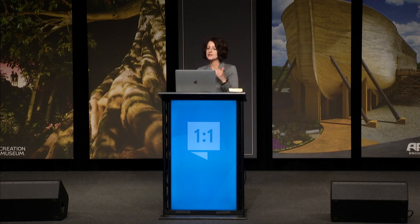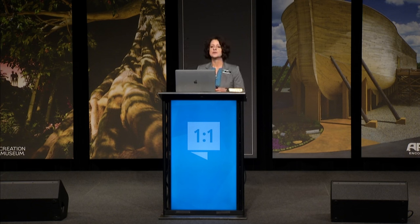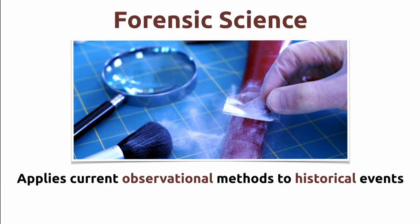What is forensic science? If we were going to define it, we would say that it applies current observational methods to historical events. Was a crime scene investigator who arrives on the scene present when the crime occurred? Did they visibly view what happened? No. They're arriving on a scene that happened in the past. They're going to use current observational methods to collect evidence and make an analysis, but they didn't actually see that crime occur.